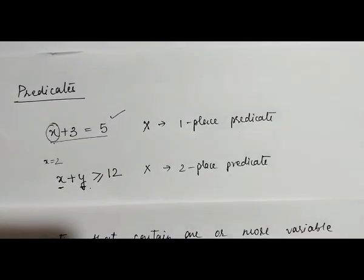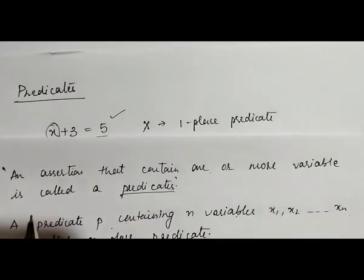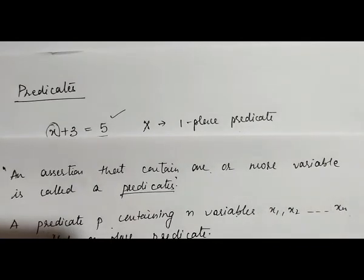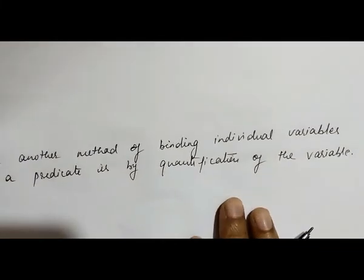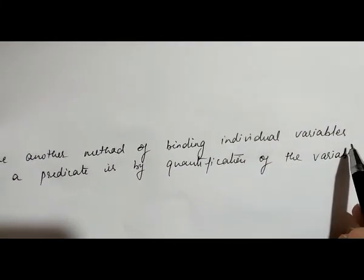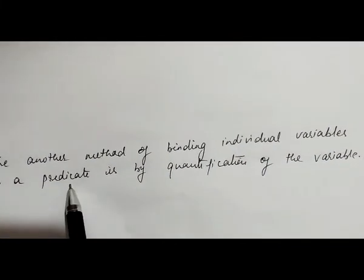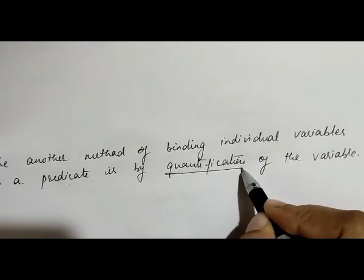Predicate is an assertion that contains one or more variables to any particular statement. Another method of binding the individual variable in a predicate is by quantification of the variable.